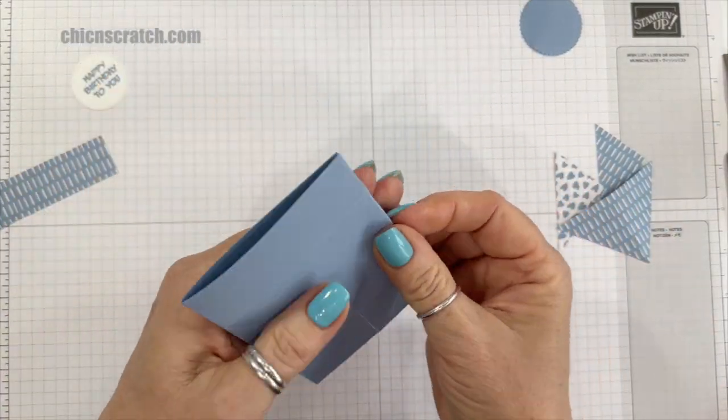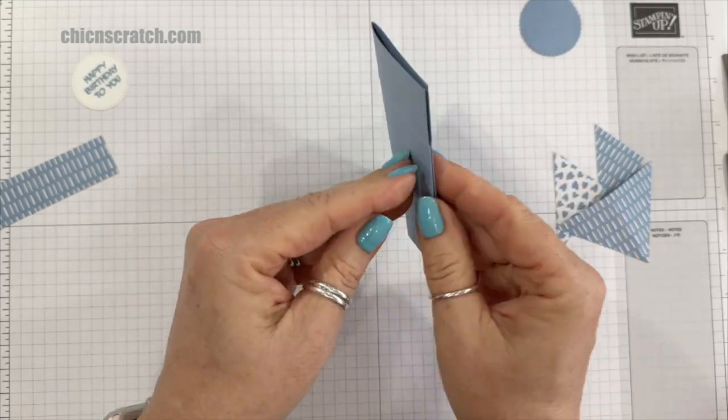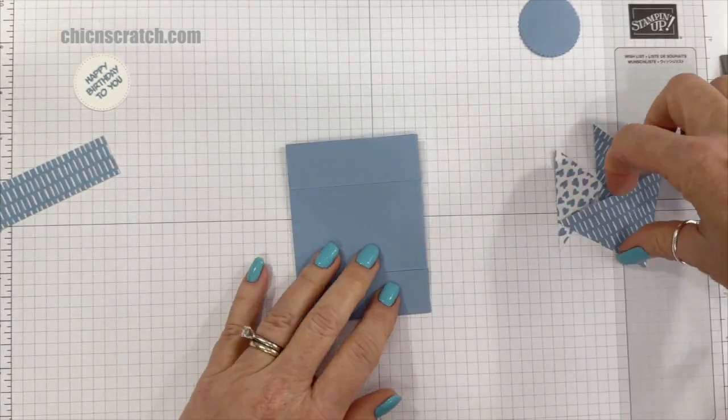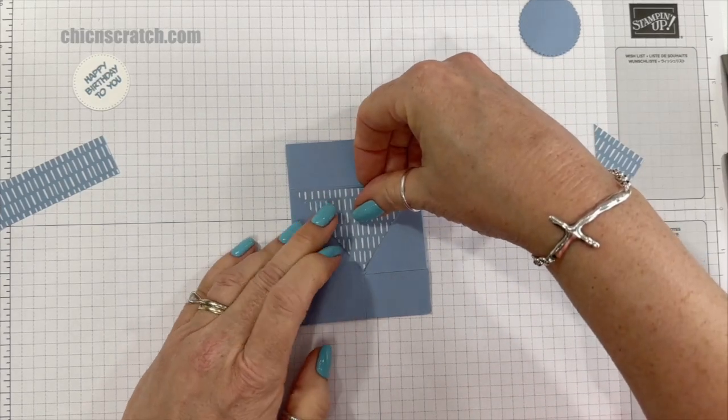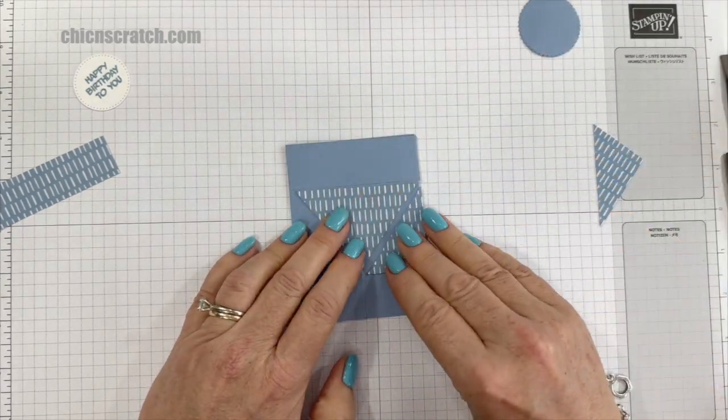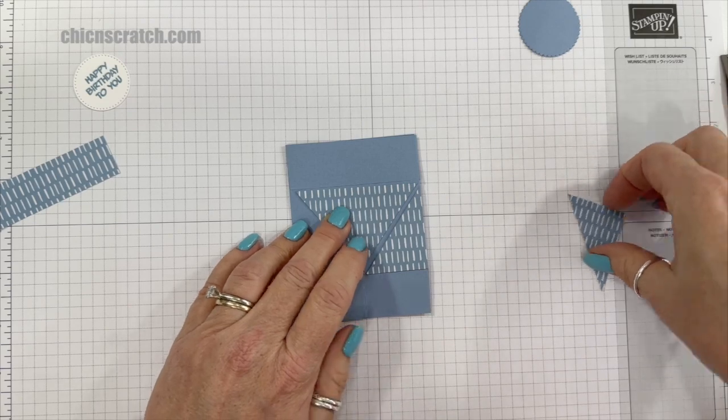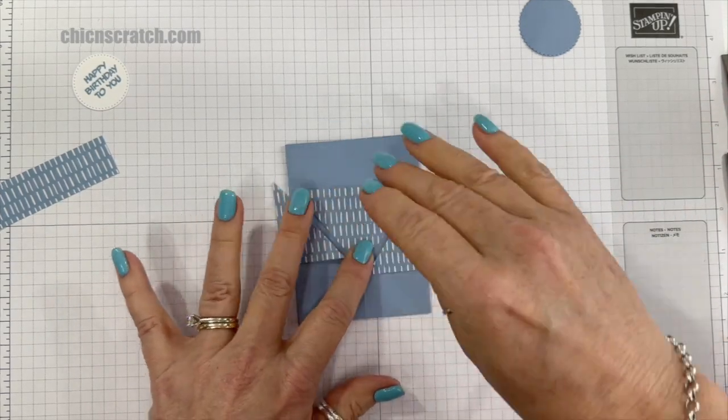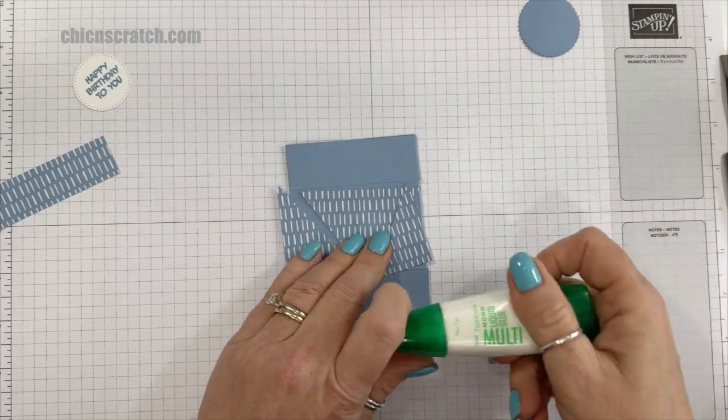Okay, so we're going to fold it like this. So this is going to be the front of my box, so that's going to go there. This one's going to go here, and this one here. So I'm just going to get some liquid glue.